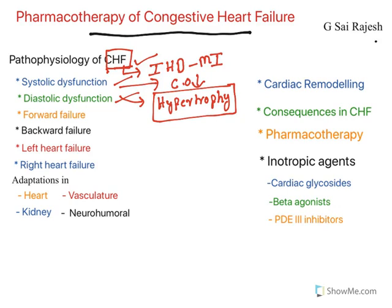I also explained about forward failure and backward failure. Forward failure means the heart loses its ability to pump blood in the forward direction. This results in congestion of blood inside the heart. When congestion is present, it also causes venous congestion. Veins drain deoxygenated blood into the heart, but when the heart is already congested, veins cannot drain their blood — hence it is known as backward failure.